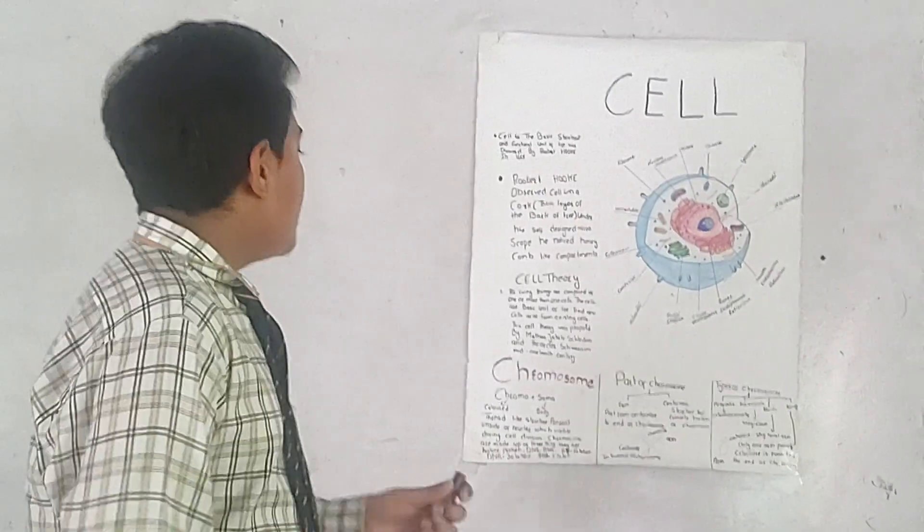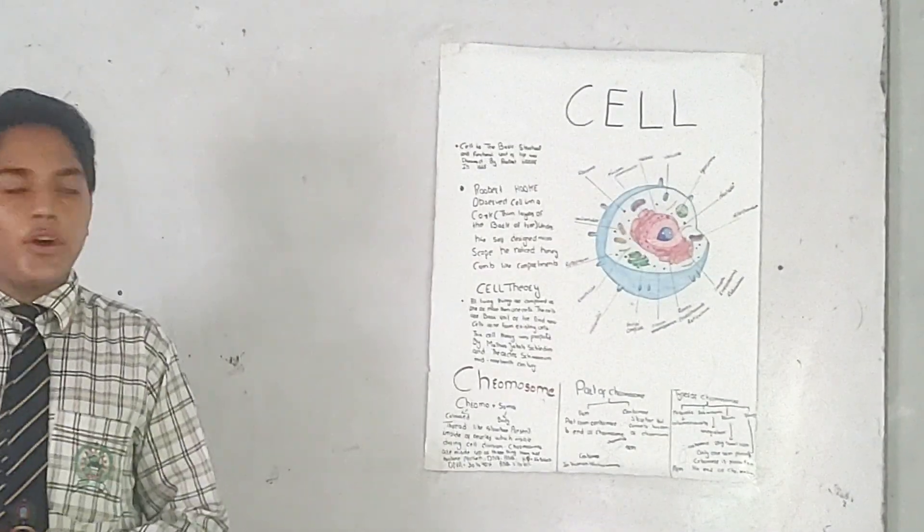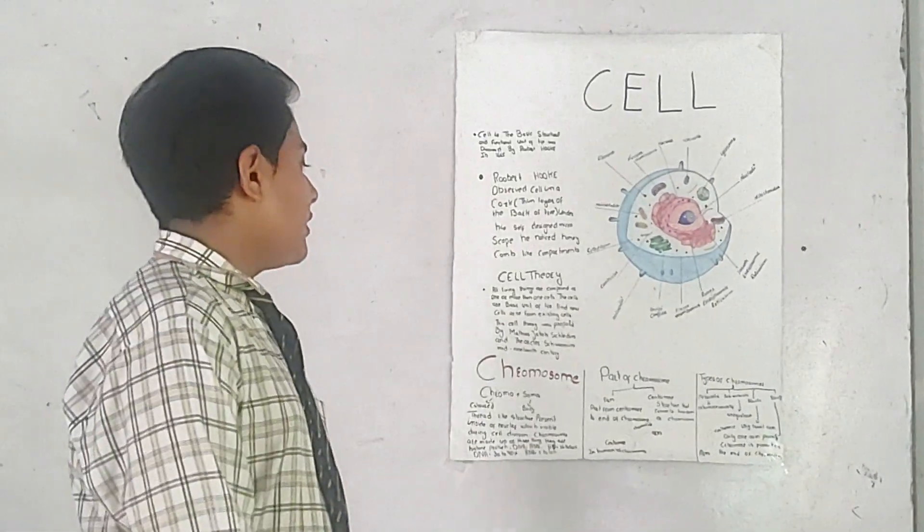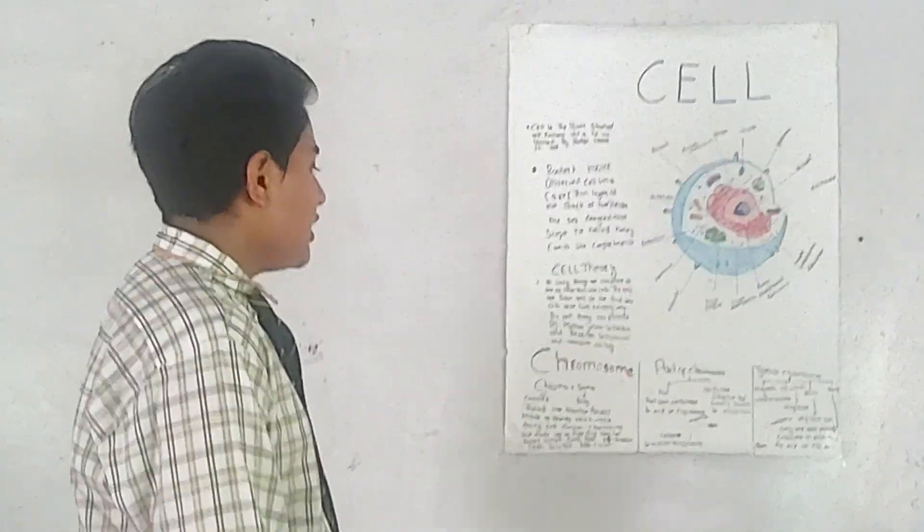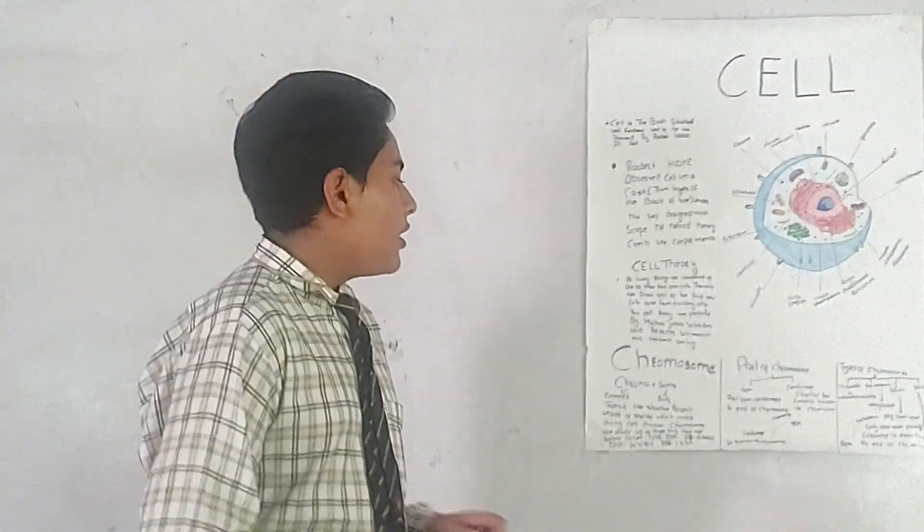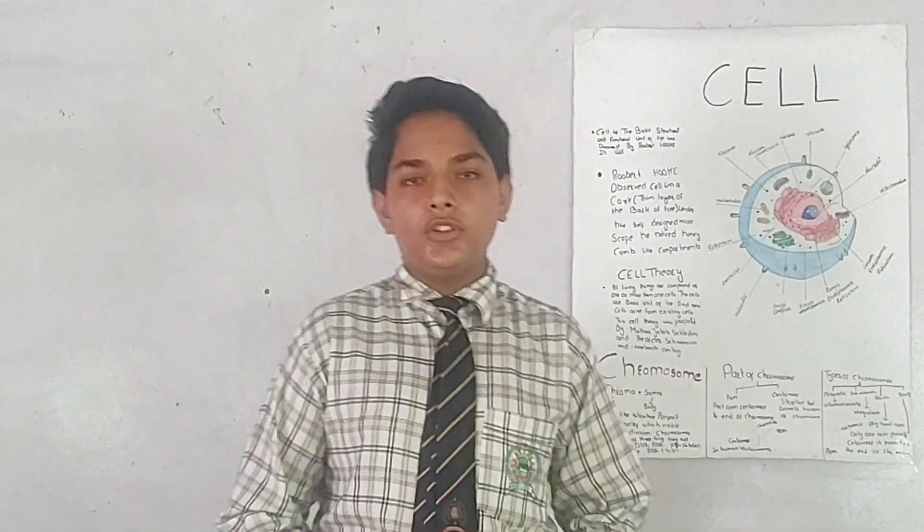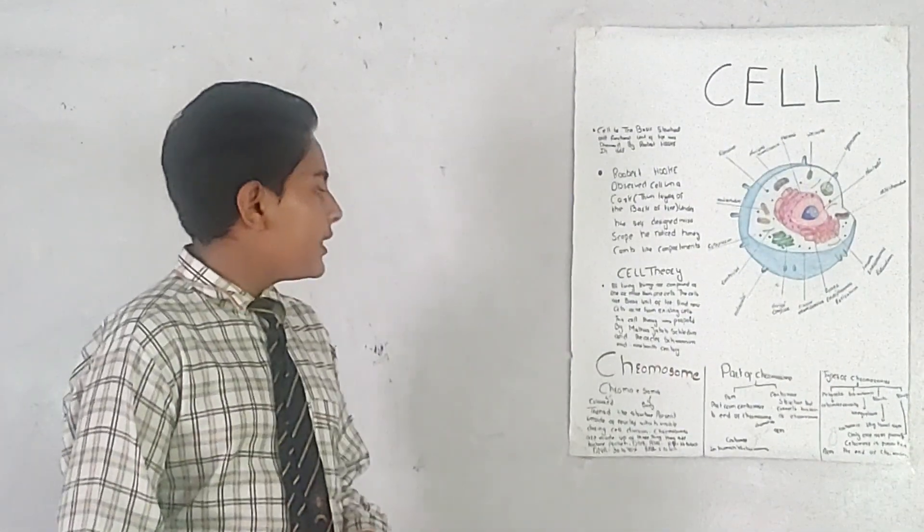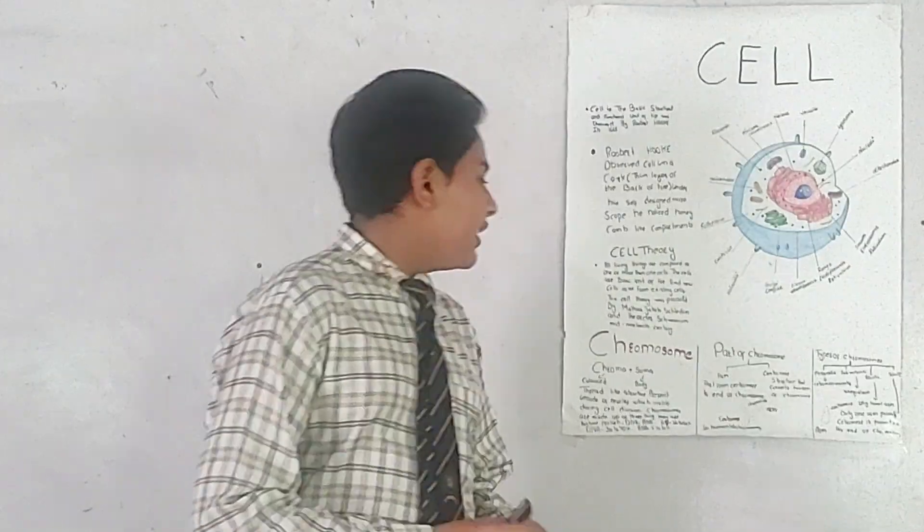What is cell theory? All living organisms are composed of one or more than one cell. Cell is the basic structural and functional unit of life. Cells will arise from pre-existing cells. This theory was given by jointly two scientists: Matthias Jakob Schleiden and Theodor Schwann.